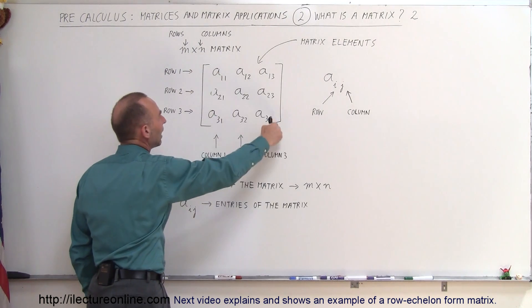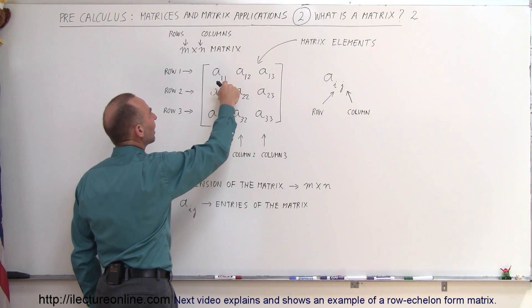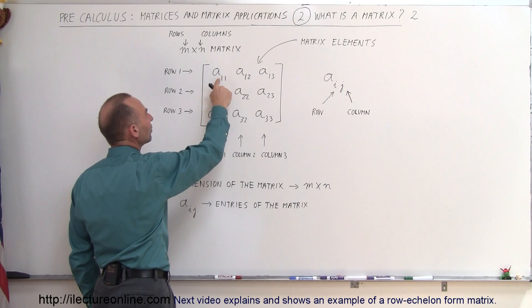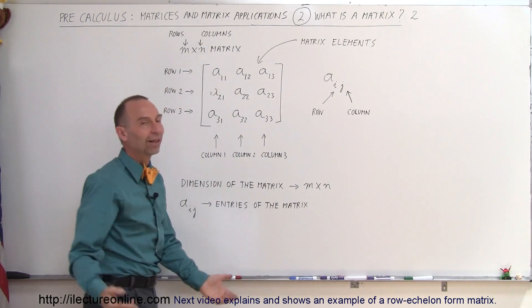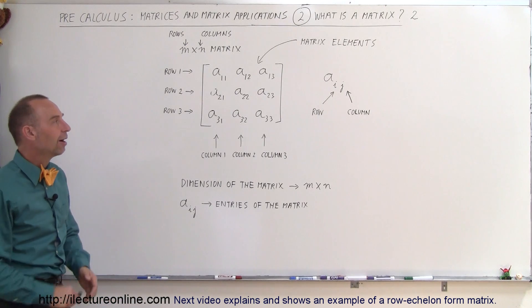Notice the numbers on the diagonal have the same row as column number. So this is row 1, column 1; row 2, column 2; row 3, column 3. And that's what we call the diagonal line of the matrix.